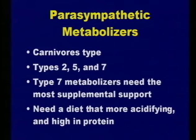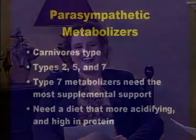Now we go to the parasympathetic metabolizer—types two, five, and seven. Two is the strongest of this group, five is in the middle, and seven is the weakest needing the most supplemental support. Type three is balanced—you get so few of them anyway and it's hard to achieve that balance. There aren't that many balanced people in our society. Parasympathetic metabolizers are more of your carnivorous type—that's probably why they have incisors. They need more protein and run a little more alkaline, so it's okay to have a little more acid from protein.